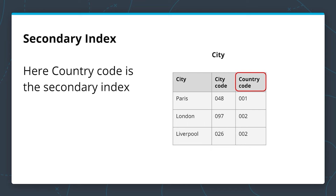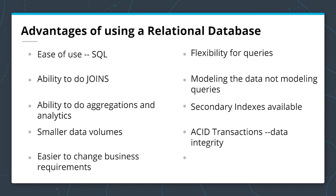In this example, our primary key is on city, and that is what we would normally use in our queries. Let's imagine we normally do our queries using the city, but we find we're frequently using the country code in our queries. We can create a secondary index to speed up that retrieval process. Be aware, secondary indexes require additional resources.